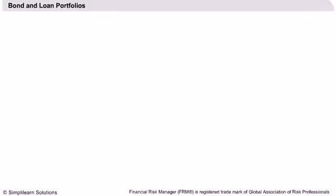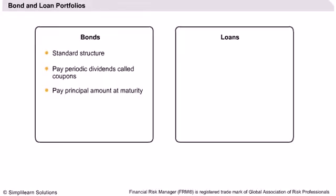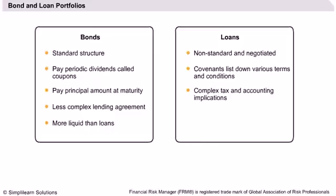Bond and loan portfolios: Bonds have a standard structure — they pay regular interest payments or coupons and principal on maturity. These portfolios have less complex lending arrangements than other portfolios and are more liquid than loans. Loans, on the other hand, are usually negotiated and have a non-standard structure. The covenants list the various terms and conditions of the loan. They are associated with complex tax and accounting implications and are considerably less liquid than bonds.